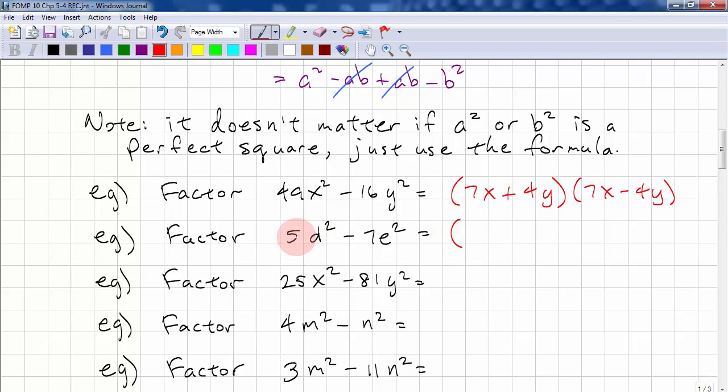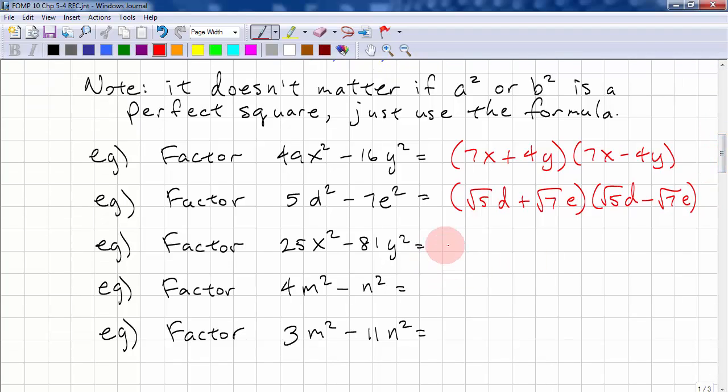Here we go. Square root of 5 is not a perfect square, so we just write square root 5. Square root of d² is d, plus square root of 7. 7 is not a perfect square, we just write square root. Square root of e² is e. We have the same terms, square root 5, d, and we change it to a minus sign, and square root 7, e. So I hope you can see that that's fairly easy.